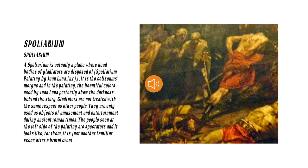Spoliarium is actually a place where dead bodies of gladiators are disposed of. Spoliarium is a painting by Juan Luna. It is the Coliseum's morgue, and in the painting, the beautiful colors used by Juan Luna perfectly showed the darkness behind the story. Gladiators are not treated with the same respect as other people — they are only used as objects of amusement and entertainment during ancient Roman times.